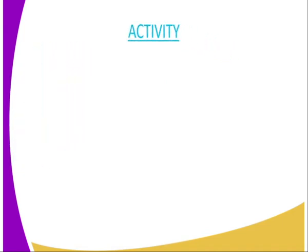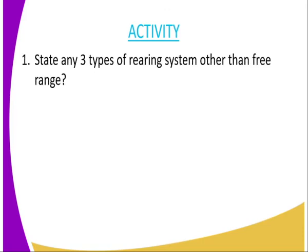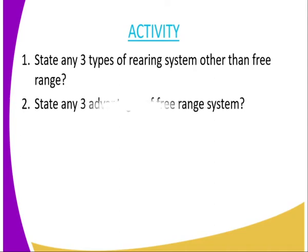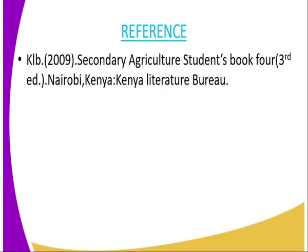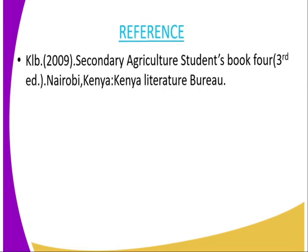We have come to the end of today's lesson, and I will close by giving you an assignment. Question one: state any three types of rearing system other than free range. Question two: state any three advantages of free range system. For reference, you can refer to the Secondary Agriculture Student Book 4, published by the Kenya Literature Bureau.